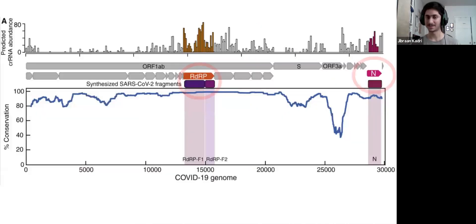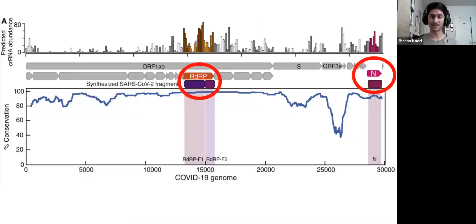These same scientists compared a bunch of genes from different coronaviruses, and found two genes that were quite consistent throughout their analysis. This was the RDRP gene and the N gene. This means that in the event of a mutation or a new COVID-19 strain, the Pac-Man would still work because these genes would still be intact.